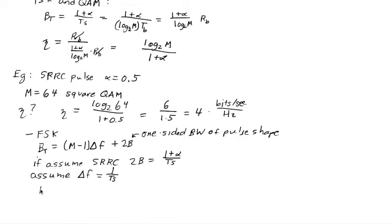And in that case, then we have the bandwidth bt is equal to m minus 1 divided by T sub s plus this 2b, which we replace by 1 plus alpha over T sub s. In other words, m plus alpha divided by T sub s.